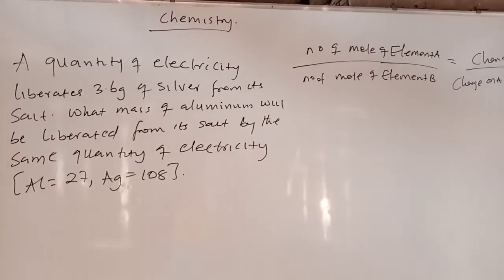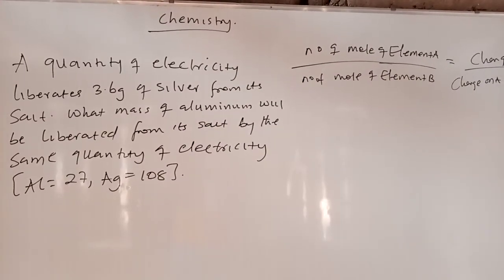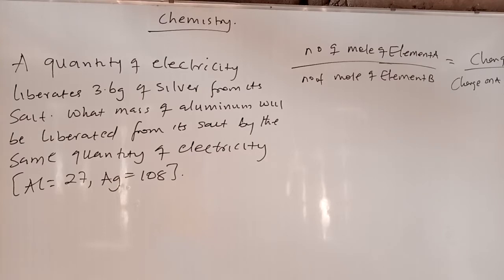Here is the question: a quantity of electricity liberates 3.6 grams of silver from its salt. What mass of aluminium will be liberated from its salt by the same quantity of electricity? The molar mass of aluminium is 27, and the molar mass of silver is 108.